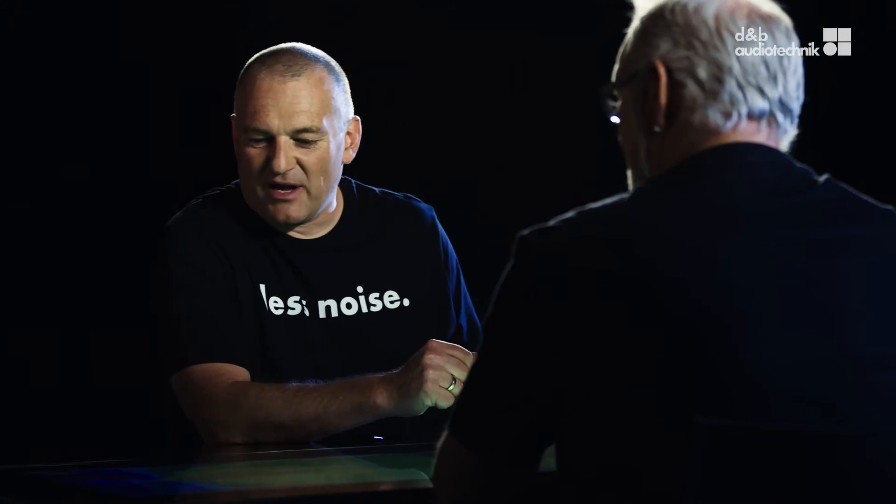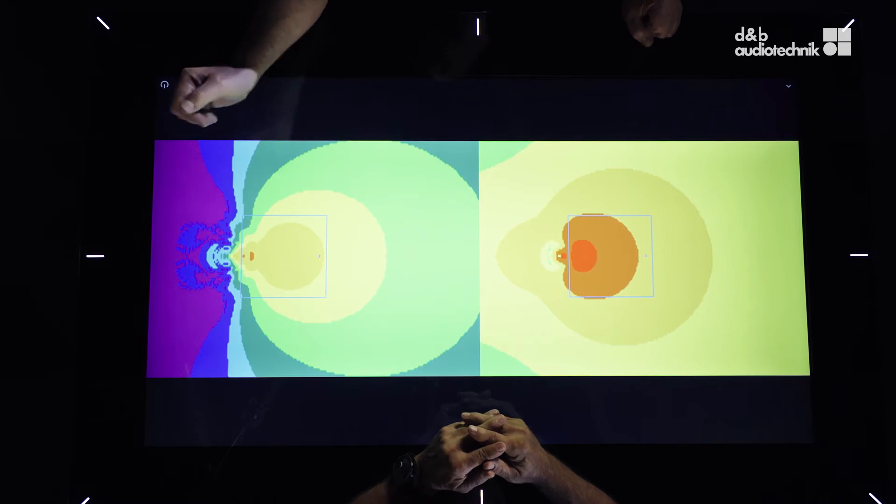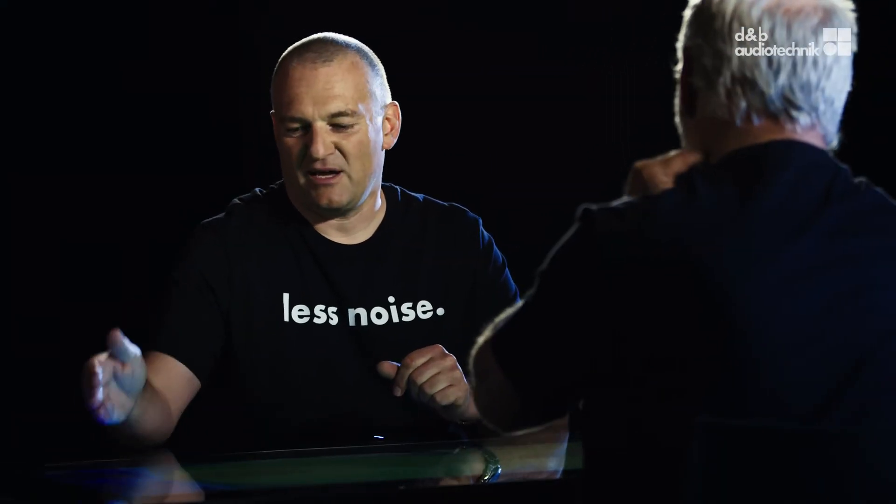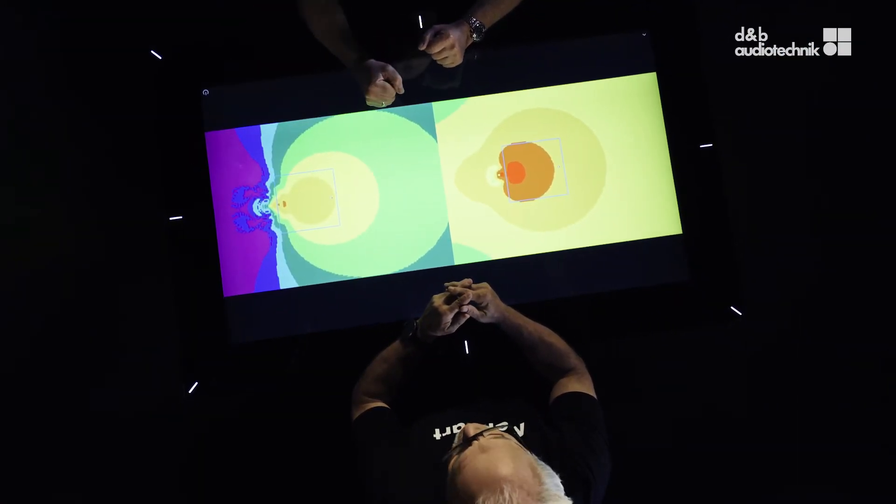If we look at higher frequencies of a top cabinet on this diagram here, basically 300 hertz, it's a frequency range above approximately 300 hertz where we could claim we have proper directivity. This frequency range concentrates the energy on the audience area and minimizes it towards the rear. So the situation here is pretty well under control.